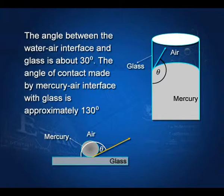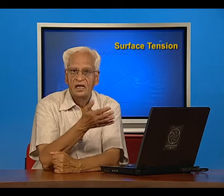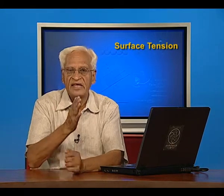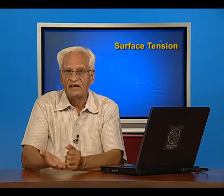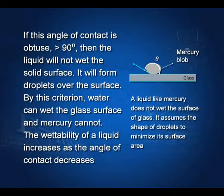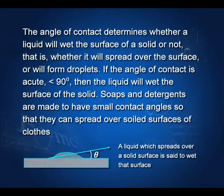Here, there is a mercury drop on the glass plate and this angle is the angle of contact. The angle of contact determines whether a liquid will wet a surface or not. If water is able to spread on glass, it will wet it; if not, it will not. If the angle of contact is less than 90 degrees, it will wet, and more so if the angle is smaller. Soaps and detergents are made to have small contact angles so that they can spread over soiled surfaces of clothes.